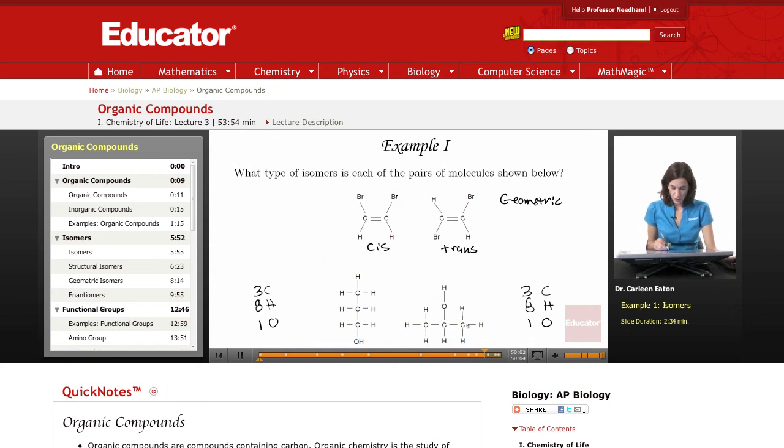Here I have the three carbons, but instead of the oxygen being bonded to a carbon on the end, the oxygen is bonded to a middle carbon. Therefore, the covalent bonding is different. And these are, in fact, structural isomers.